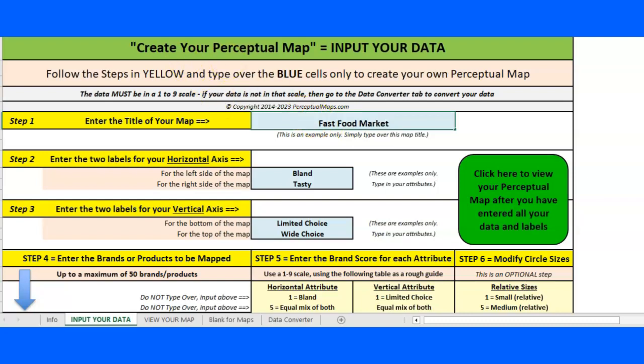You can change that. I'm just going to change that to 'my map.' Then, depending upon the product category or industry you're looking at, you can change what's on the left side running horizontal across or the right side running the other way.